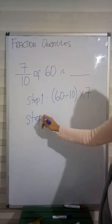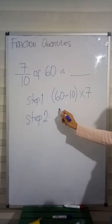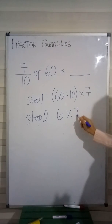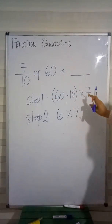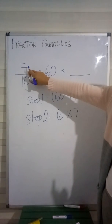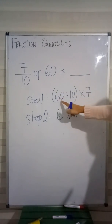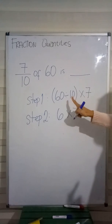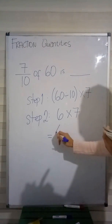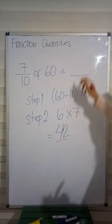Now we go to Step 2. We divide first: 60 divided by 10 is, of course, 6. We still have 7 here. We multiply: 6 times 7 — the 7 comes from our numerator, and 6 comes from 60 divided by 10. So, 6 times 7 — the answer is 42. Therefore, 7 tenths of 60 is 42.